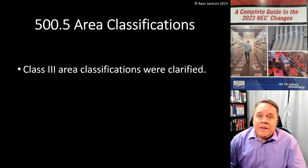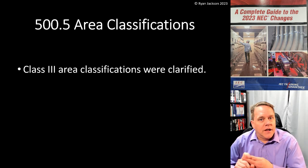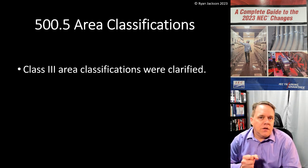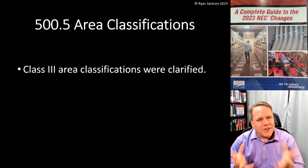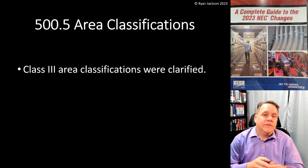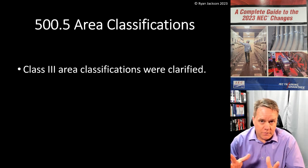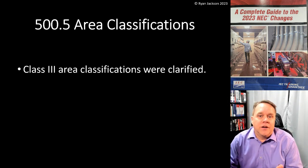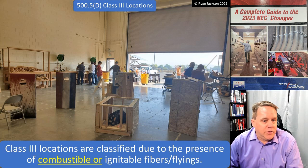500.5, area classifications — a really important section in the code. 500.5 tells us which areas to classify: Class 1, Class 2, Class 3, Divisions 1 and 2. Class 3 locations are now clarified, and honestly this is something we've needed for quite some time. Class 1 and Class 2 have been pretty clear, but Class 3 has not been clear for a very long time. Code-making Panel 14 has now made a real effort to clarify what a Class 3 location is and what Division 1 versus Division 2 means.